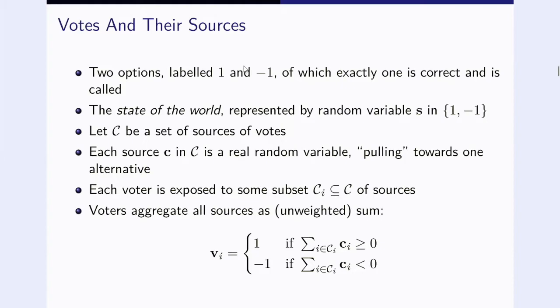Here is the model. We have two options labeled one and minus one. Exactly one is correct. We call this one the state of the world, which is a random variable, both s in the set one or minus one. Let curly C be a set of sources of votes and let each source c in curly C be a real random variable pulling towards one of the two alternatives. Each voter is exposed to a subset of some of these sources, and voters just aggregate all the sources as unweighted sums. So basically just add them up. You could say that they get different signals depending on how many sources they are subject to, and they just take the sum and then vote accordingly depending on whether the sum points towards one or minus one.